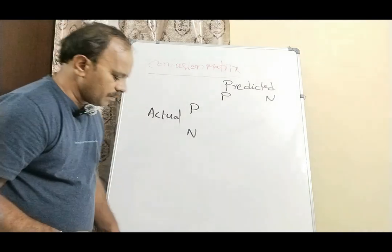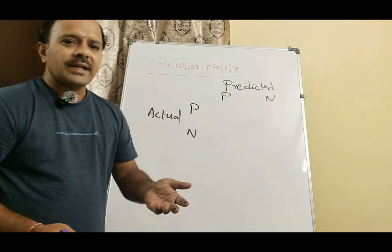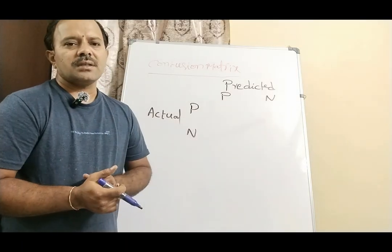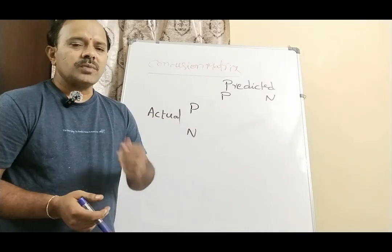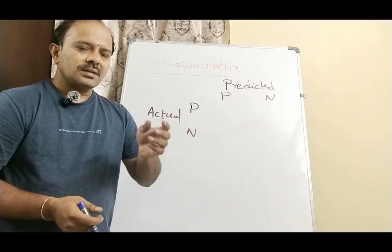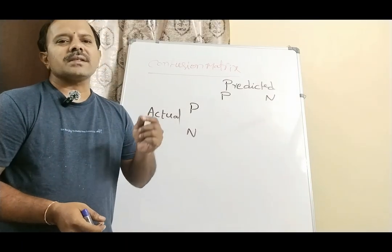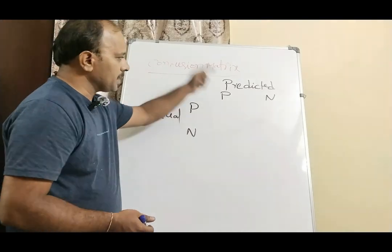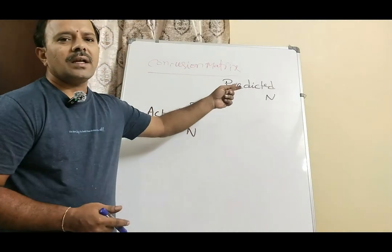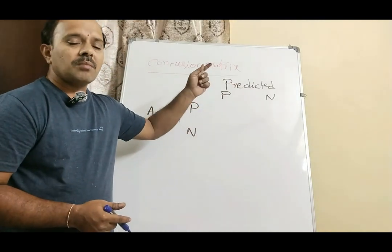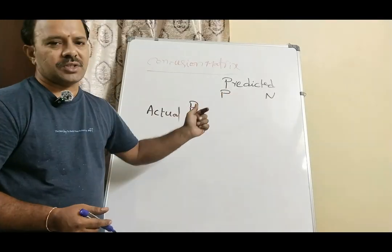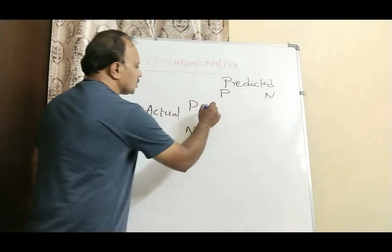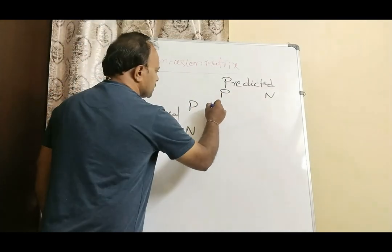When the actual element is positive and the model also predicted it as positive, we call it true positive, labeled as TP.